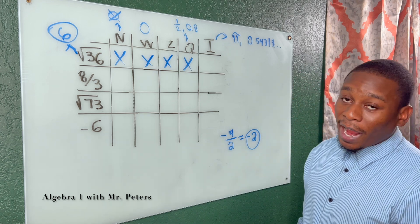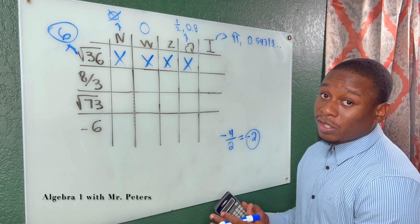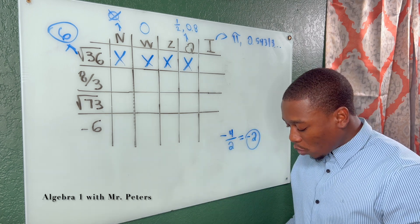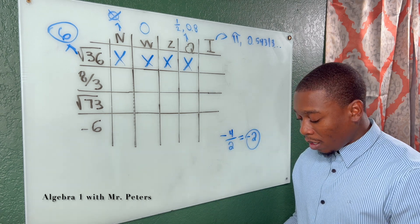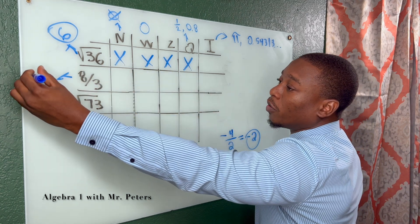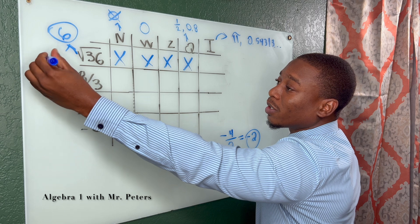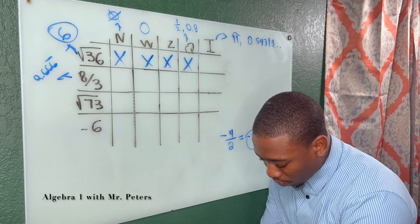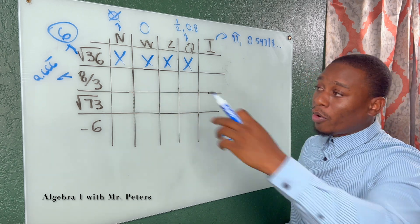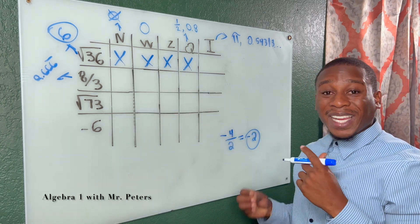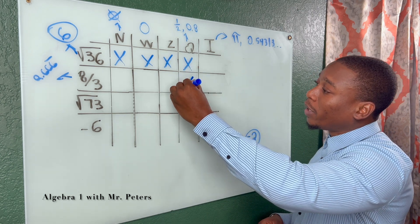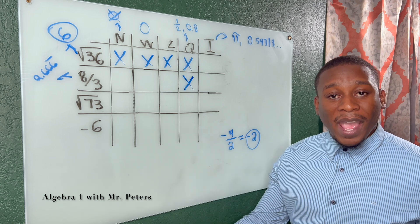When we go to the fraction 8/3, don't just say it's a fraction so it's irrational. Take your calculator and do 8 divided by 3. It gives us a repeating decimal of 2.666... repeating. Since this is a decimal and not a whole number, natural, whole, and integers don't apply — those have to be whole numbers. So 2.666... repeating is rational.